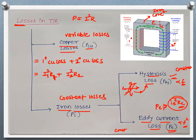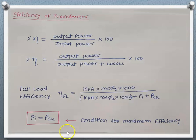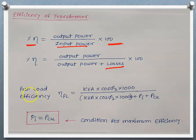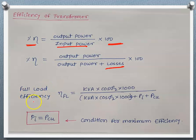Let us see what is meant by efficiency of a transformer. The efficiency of a transformer is the ratio of output power to input power, multiplied by 100, expressed as a percentage. So efficiency equals output power divided by input power, which is output power plus losses. We calculate efficiency as per the load — full load efficiency if fully loaded, half load efficiency if at half load, or at any load using this expression.